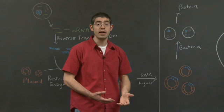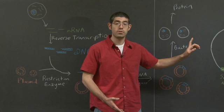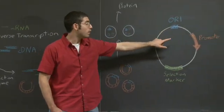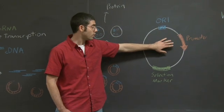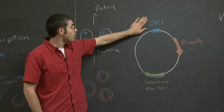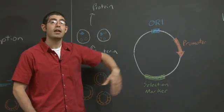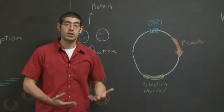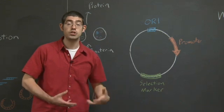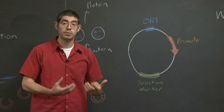Referring back briefly to the vector, there are several parts that are important for it to have. We're going to need to have the origin of replication, the promoter, and the selection marker. The origin of replication initiation, or ORI, is necessary if we want the bacteria to produce more copies of this plasmid. So once the plasmid gets into the bacteria, if we don't have an ORI, as the bacteria grows and reproduces, none of the daughter cells will have this plasmid. We'll have to continually transform them.